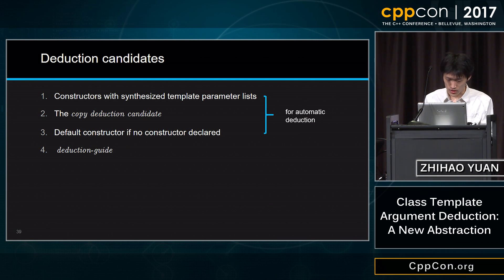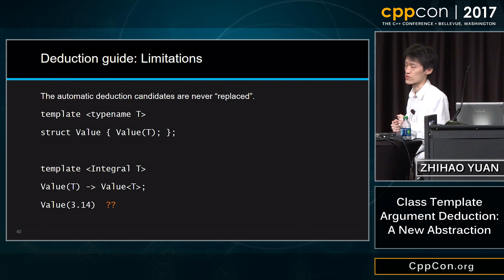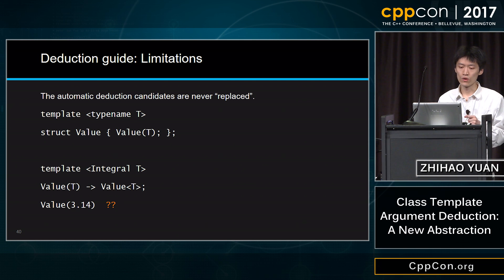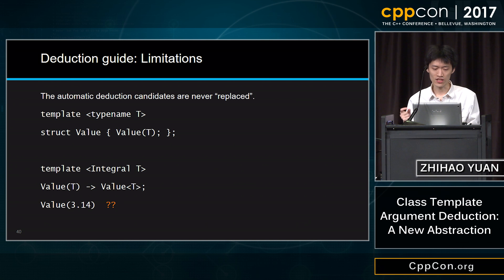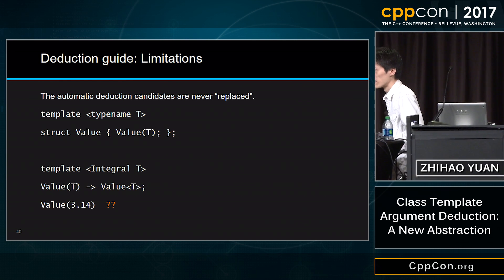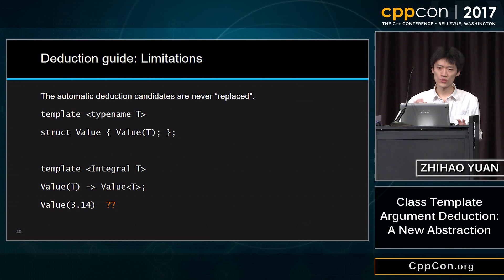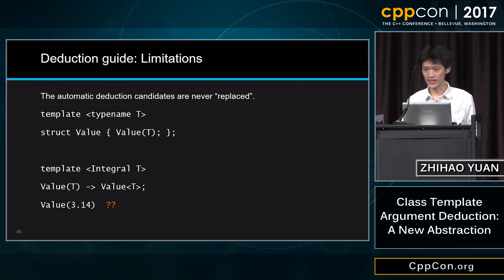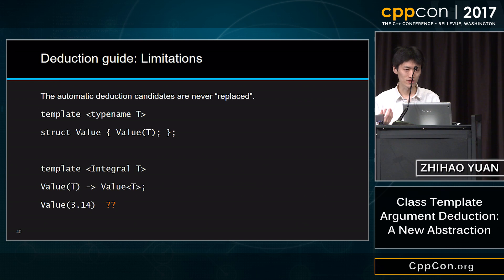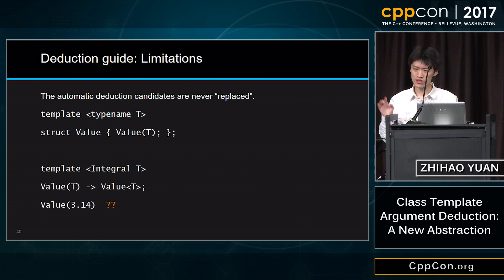Based on the language rule, a deduction guide takes priority over automatic deduction candidates when it is at least as specialized as those candidates. In this example it's even more constrained, so it takes priority. However, when this constraint is not satisfied, the last line is not rejected — instead it falls back to the automatic deduction candidates. So you cannot actually impose more constraints through a deduction guide alone; you need some other ways to do so, or maybe that is just not a good design. For the rest of the talk, I'm going to talk about how to design rather than how to fix these problems.